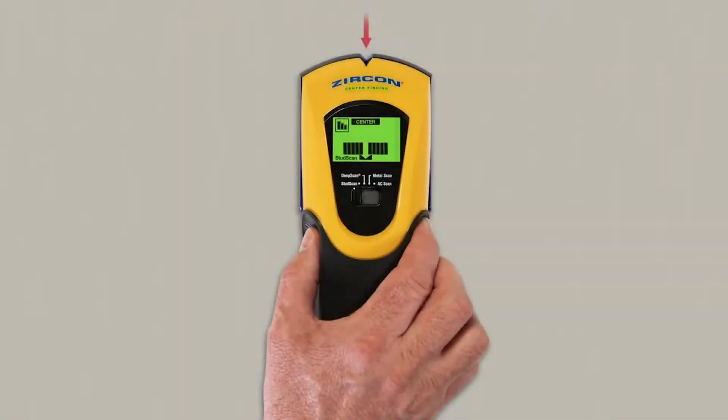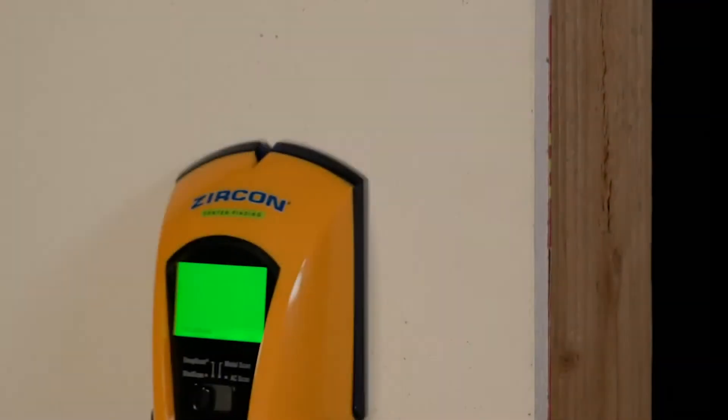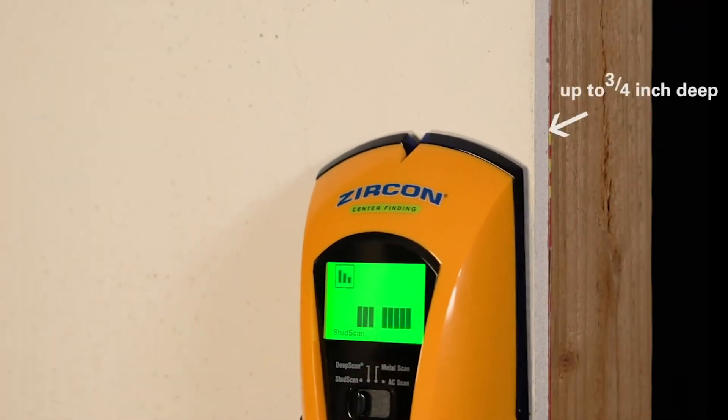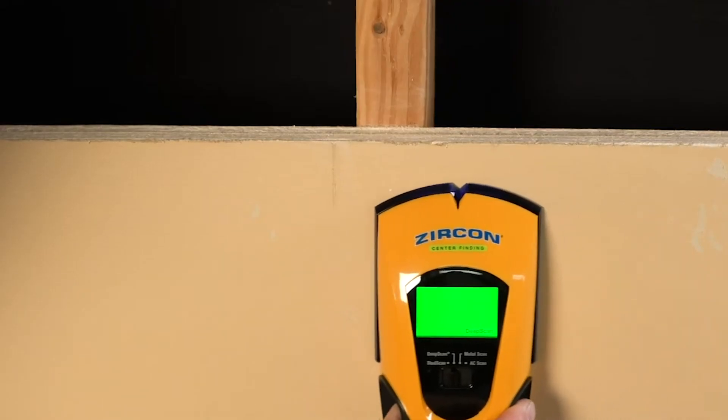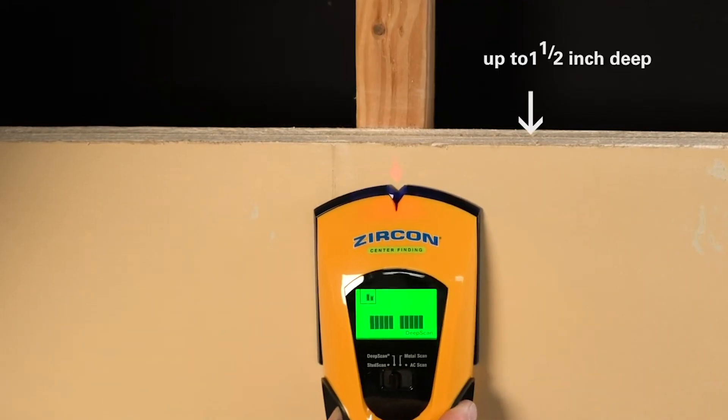The L550C features a new color display that lights green in stud scan to find the center of studs up to three quarters of an inch deep, green in deep scan to find the center of studs up to 1.5 inches deep.